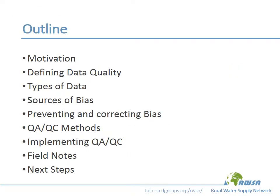We'll begin with talking about the motivation for this topic, why data quality matters, and defining what we mean by data quality, as well as the types of data we want to collect for water quality monitoring programs, and some of the sources of error and bias that can creep into our water quality monitoring data. We'll talk about steps that we can take to prevent and correct errors and bias, and drill in, in particular, on quality assurance and quality control methods, and how they can help us improve data quality, as well as how we can implement QAQC methods in routine monitoring programs.